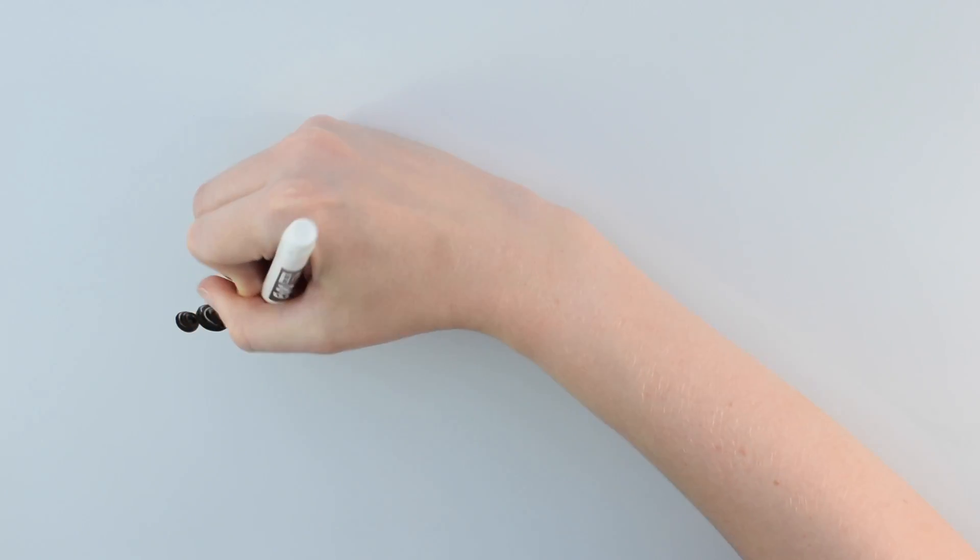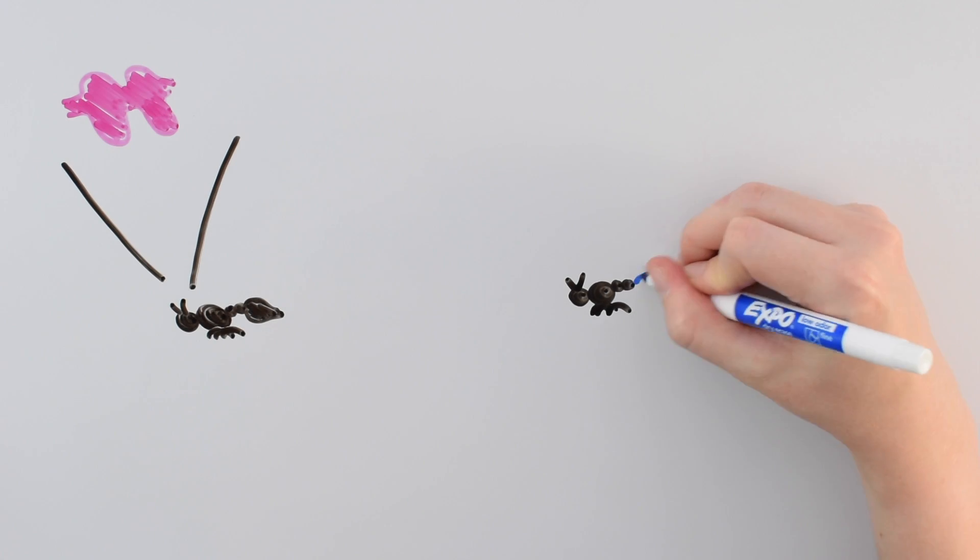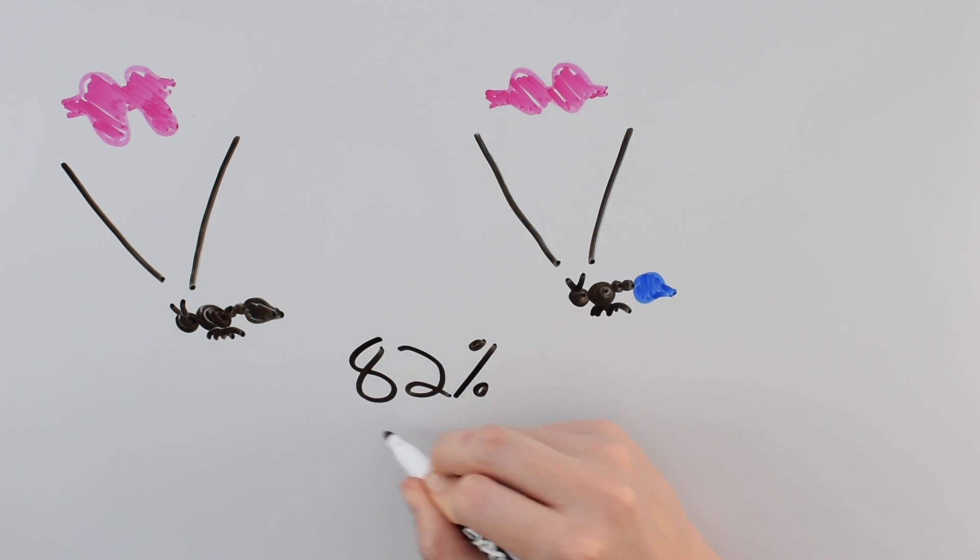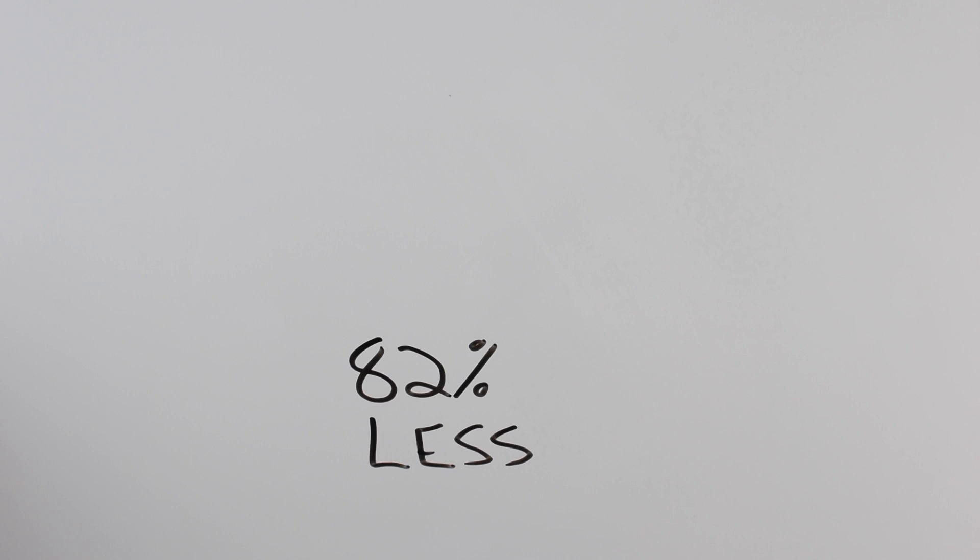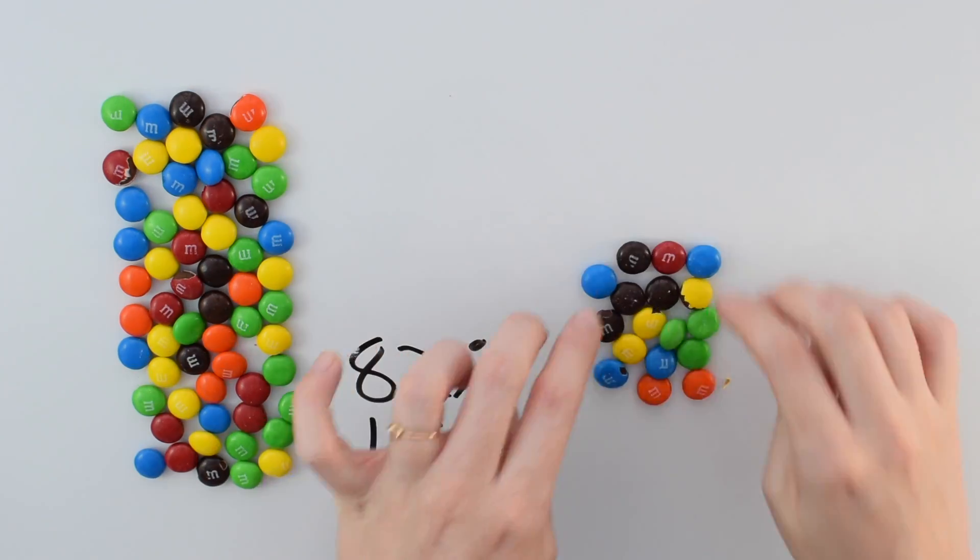In addition to these obvious changes in behavior, the ants also showed big changes in their brains. In fact, ORCO mutant ants have smaller brains and have less odor-specific neurons in their antenna. ORCO mutant ants had 82% less antennal lobe glomeruli, which are the specific odor processing units in the insect brain. An 82% decrease is like going from a regular-sized bag of M&Ms down to fun-sized.